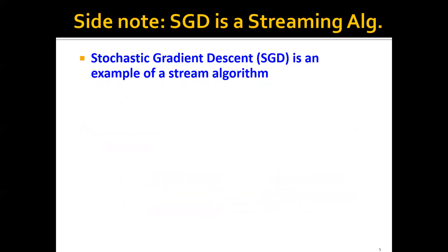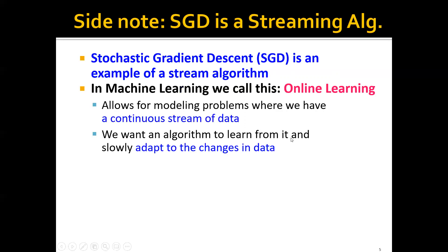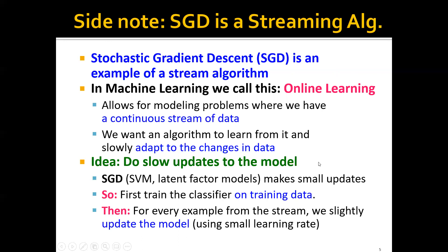As a side note, in the previous lecture we talked about using SGD to learn SVM in an online setting. SGD is already an example of a stream algorithm. In machine learning we call this online learning, which allows for modeling problems with a continuous stream of data. The idea is to have an algorithm learn from this stream and slowly adapt to changes in the data by making slow, small updates to the model.